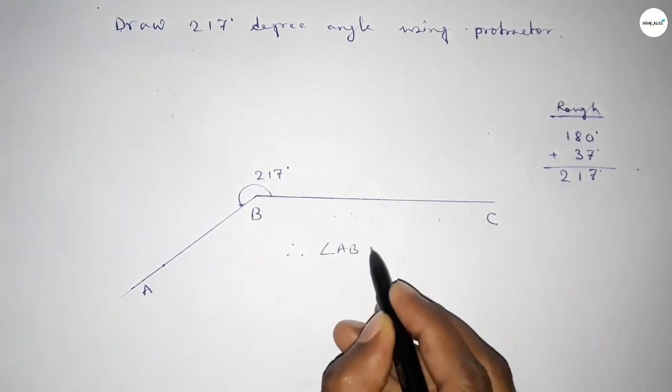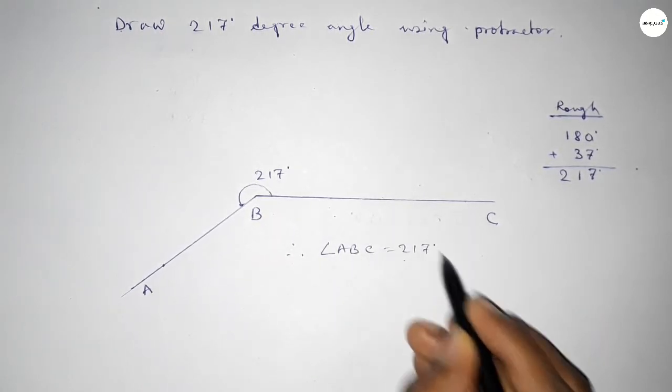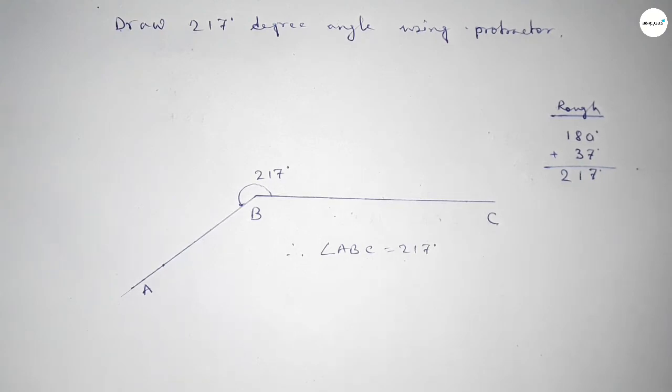So therefore angle ABC equal to 217 degree angle. That's all, thanks for watching. Please share it with your friend.